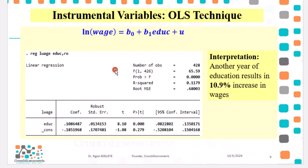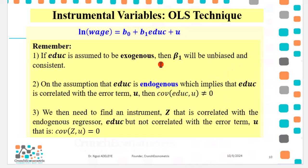So now how are you going to interpret the results of the coefficient of EDUC? Remember, we are assuming it is exogenous. So we can easily say that another year of education will result in a 10.9% increase in wages. Also remember that we are assuming that EDUC is exogenous. Therefore, beta 1 is unbiased and also consistent.